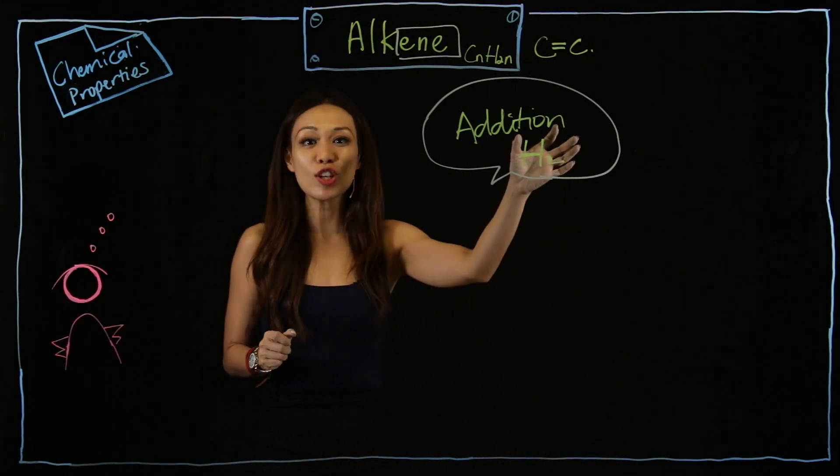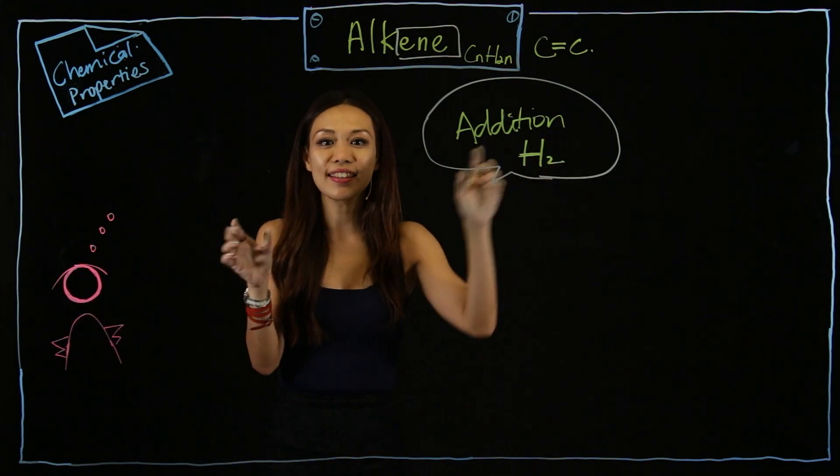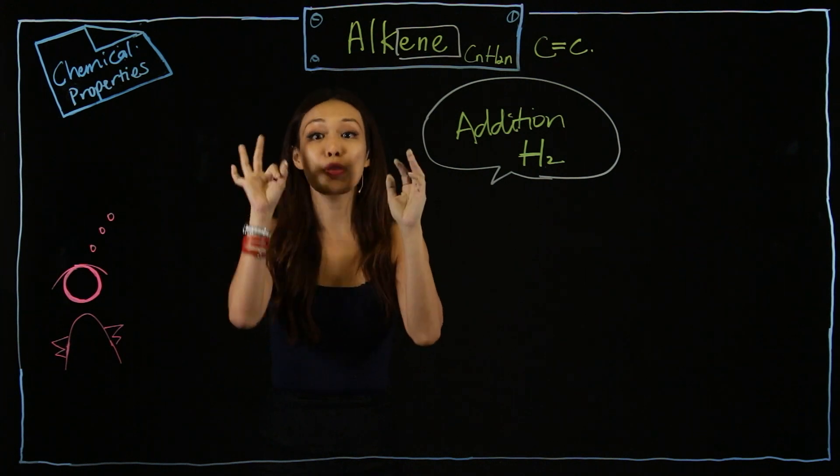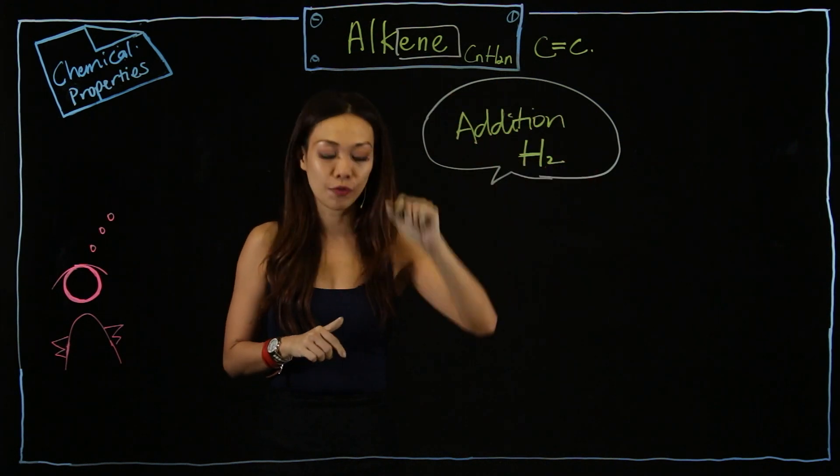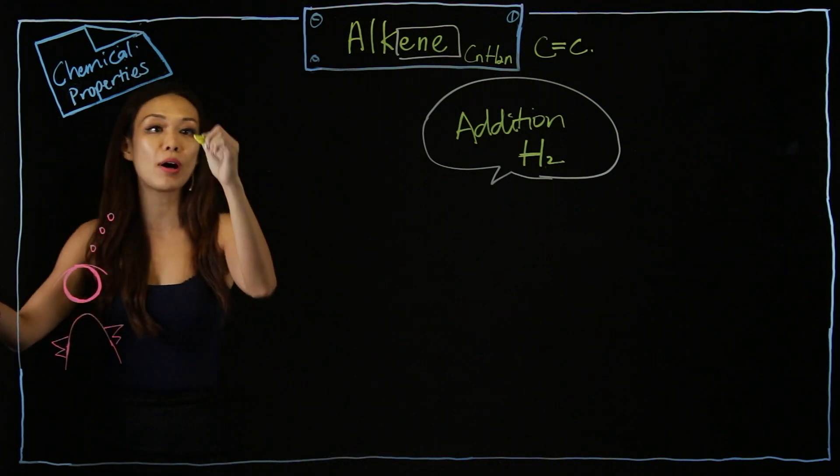Now, let's go to the addition reaction. For alkene, they will go through addition with H2. But right now, I'm going to show you addition with hydrogen first. So, let's give an example of ethene.